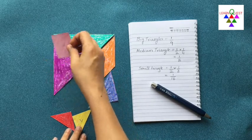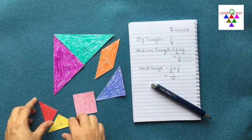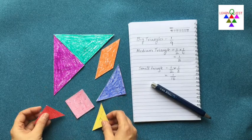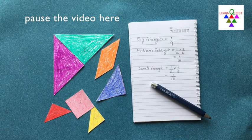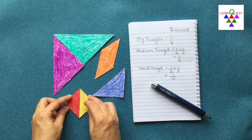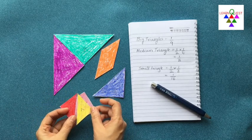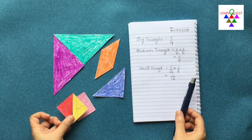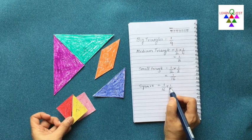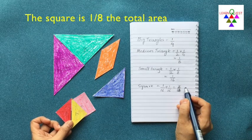Can you find out what fraction of this whole square is this square piece? Arrange the pieces whose values you know on top of these shapes — that will help you figure it out. You can see that these two small triangles exactly fit on the square, so this square is one-sixteenth plus one-sixteenth, which equals two over sixteen, which simplifies to one-eighth.